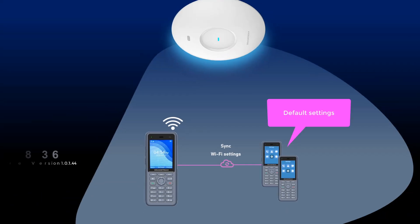In this deployment example, we will synchronize the existing Wi-Fi settings on a WP phone to two other phones in default settings with no active Wi-Fi connection.